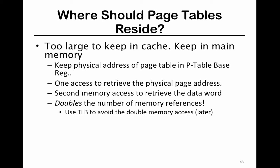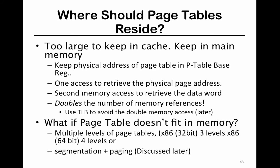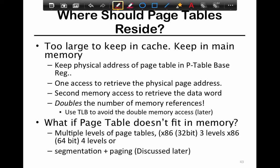Page tables are large enough that you can't keep them in cache. A single process's page table at 4 megabytes would clobber all your L1 and L2 cache in a multi-core system.